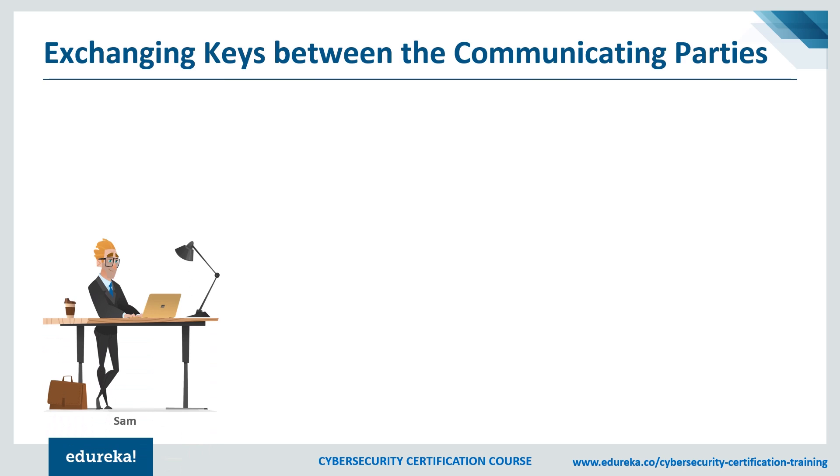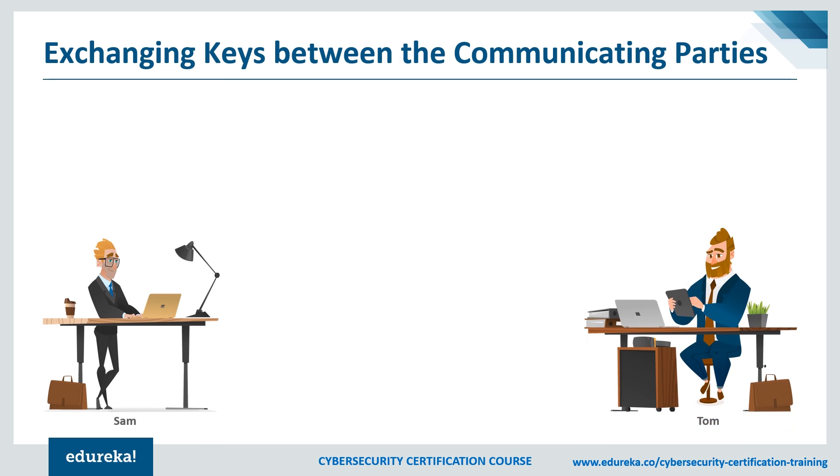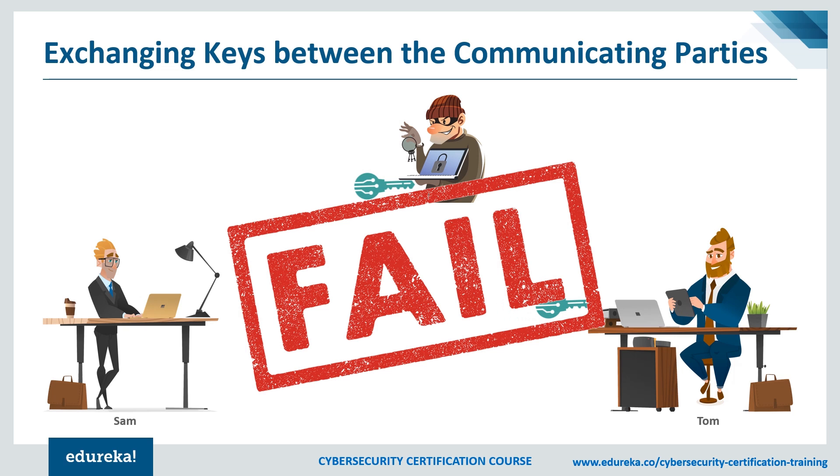Suppose Sam and Tom wish to exchange the key before they start communicating. Eve the intruder somehow got access to the communication channel and is listening to Sam and Tom's conversation and intercepting their keys being sent. If an intruder can intercept the key, then encrypting the data with that key is basically pointless. So how do we approach solving this problem?